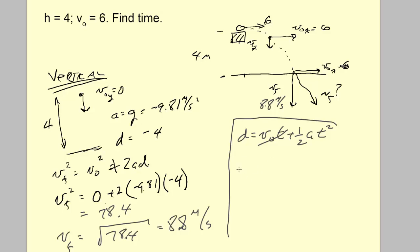Since V0 is zero, we can just use: d = ½at². Being rigorous: -4 = ½(-9.81)t². You can see that if we had used positive values in both places — since everything is just going down — it would amount to the same thing.